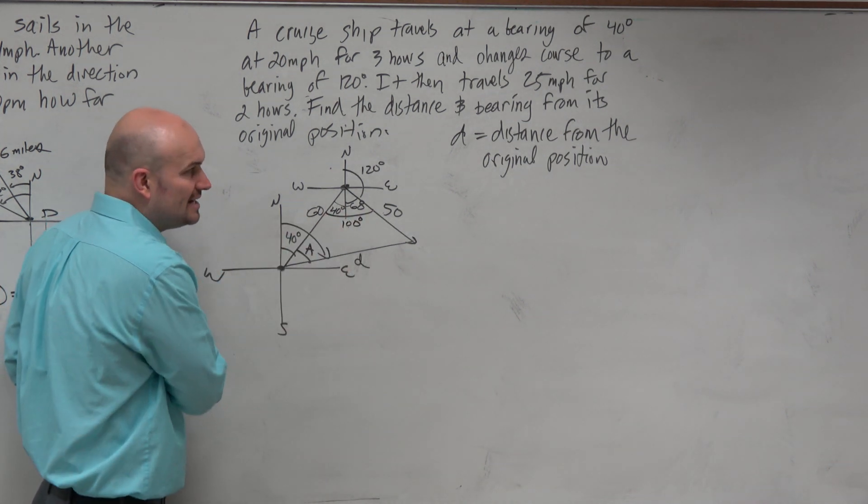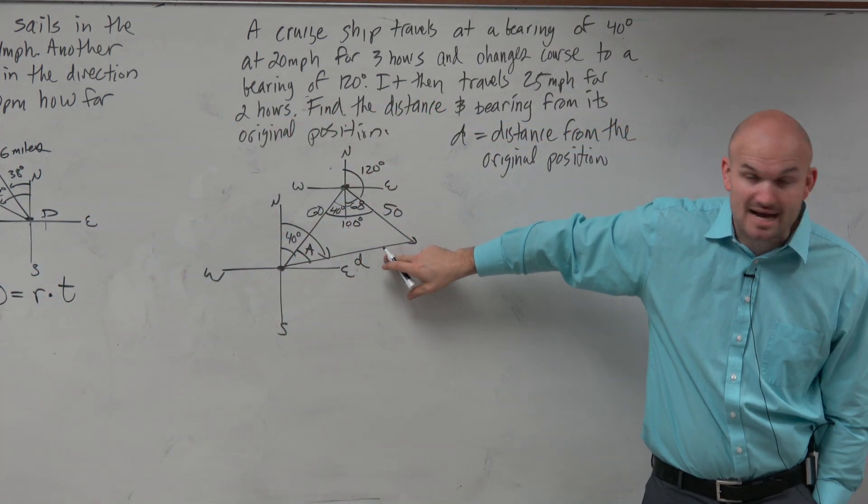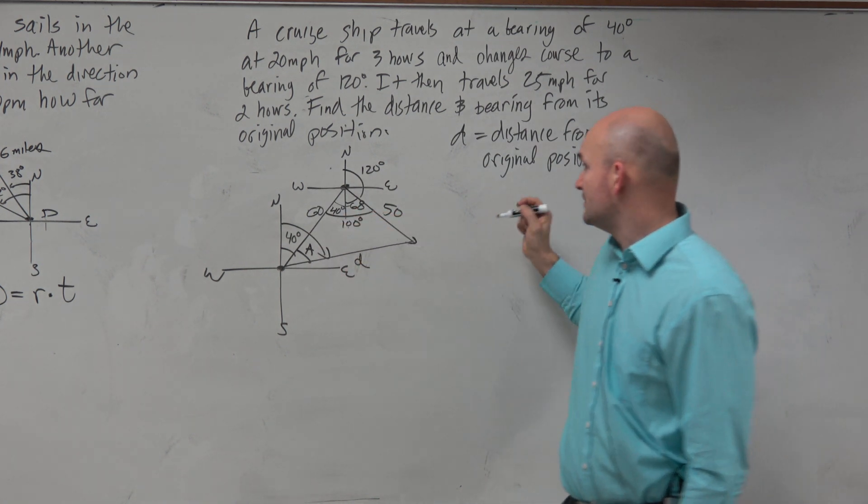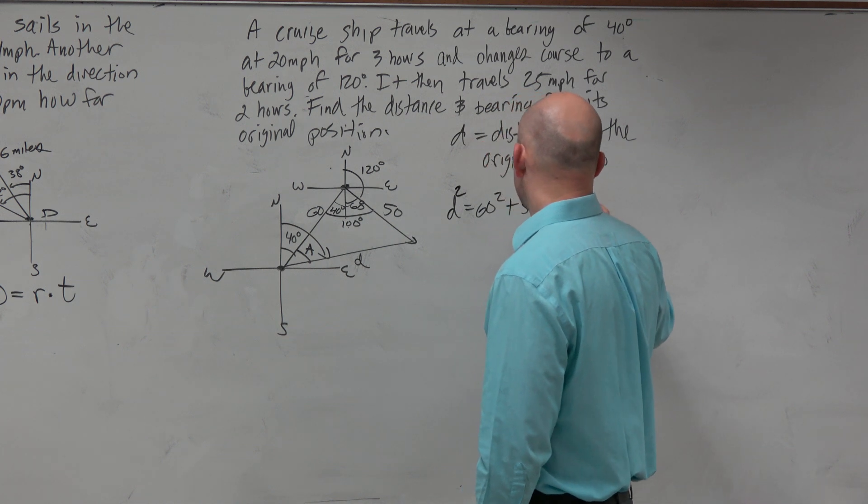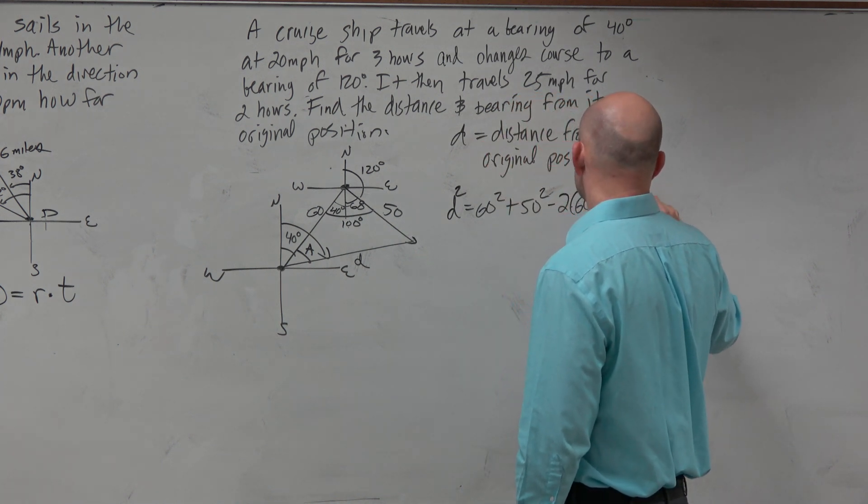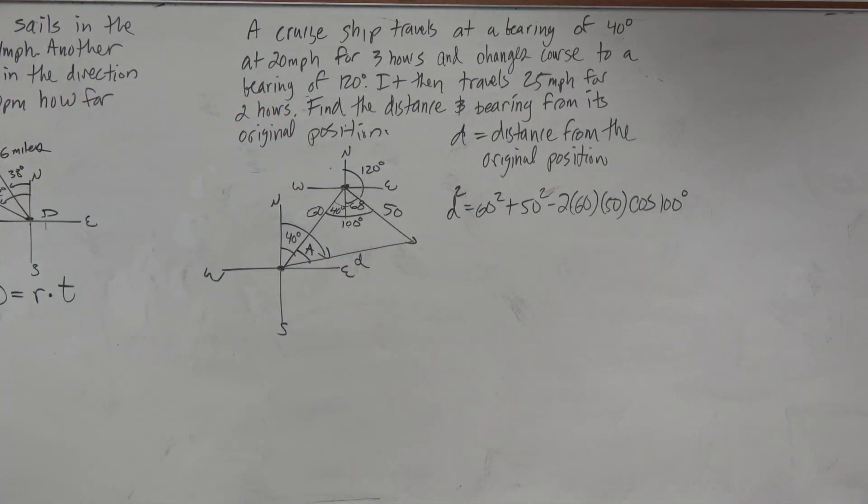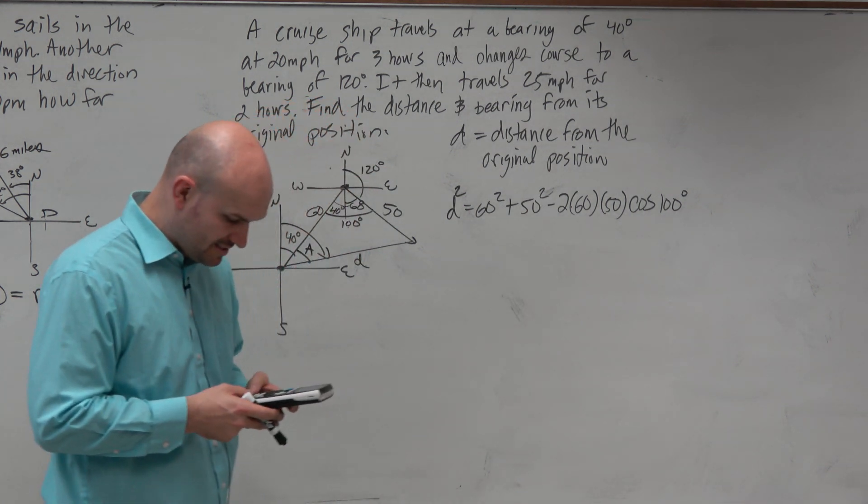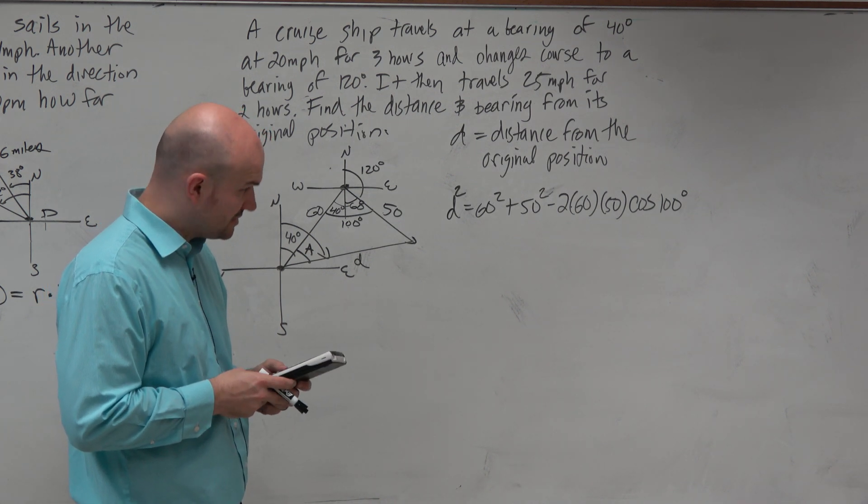100 degrees. So now I have side angle side, and now I can apply the law of cosines. So I'm going to solve for d, because in this case when you have side angle side, I can find my missing d. So d is going to represent, let's see, 60 squared plus 50 squared. Sorry, that's d squared. Minus 2 times 60 times 50 times the cosine of 100 degrees. And that's based on the formula for the law of cosines. So I'm just going to type in those side lengths. Because you only have two side lengths and you have your included angle.